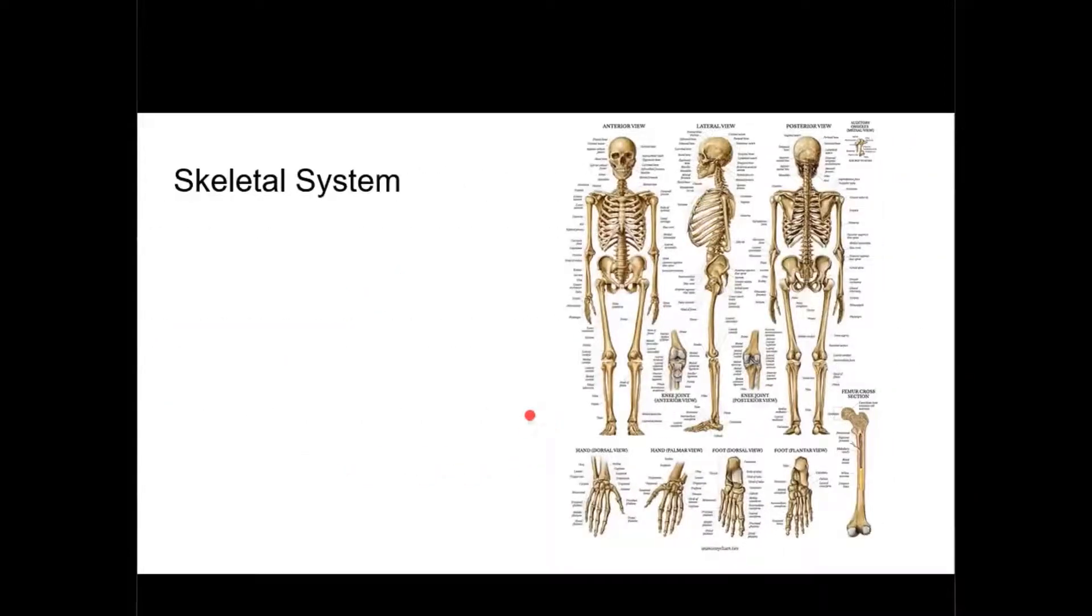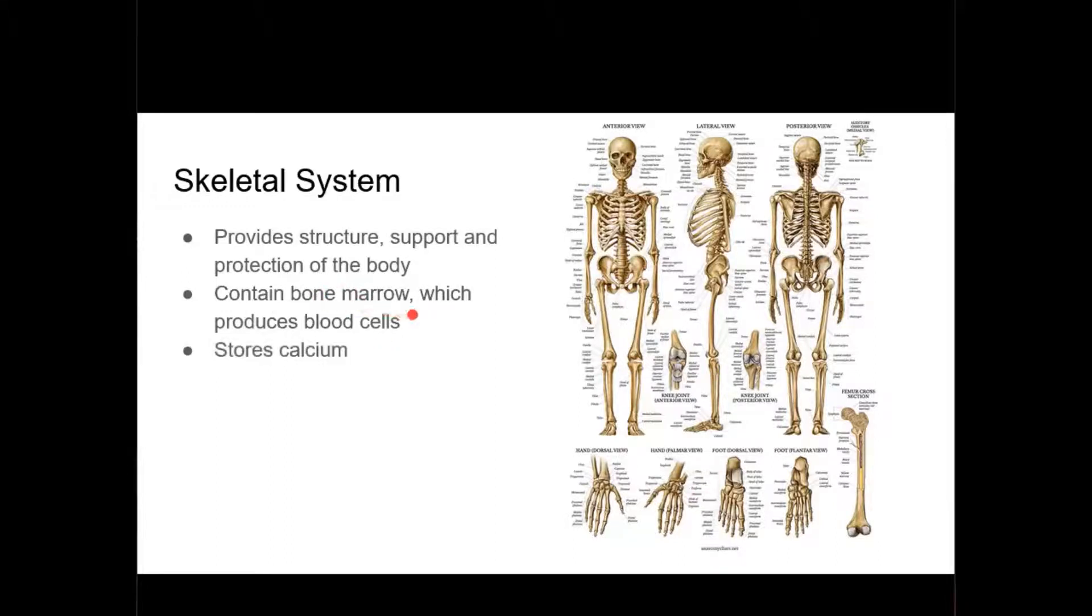First things first, we're going to talk about the skeletal system. The skeletal system provides structure, support, and protection of the internal human body. Inside the bones, you have bone marrow, with red marrow being responsible for blood cell production. Importantly, you want to know that bones are where muscles attach. When your muscles move a part of your body, they're actually moving your bones.